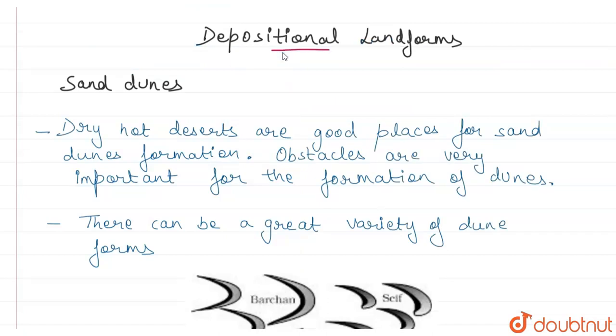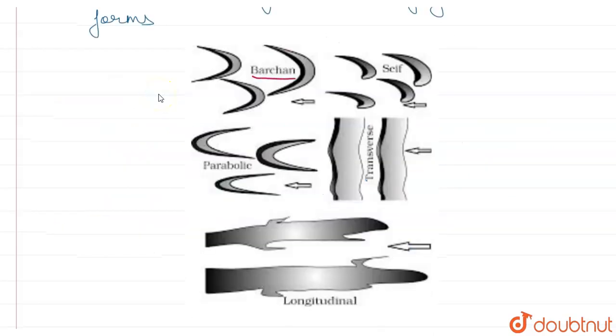Now let's talk about depositional landforms. The depositional landforms of wind are sand dunes. Dry and hot deserts are the best places for dune formation. If there is no obstacle, the sand deposit will not be able to accumulate. There are many different types of sand dunes, including crescent-shaped dunes with convex sides.